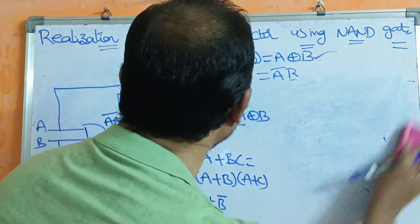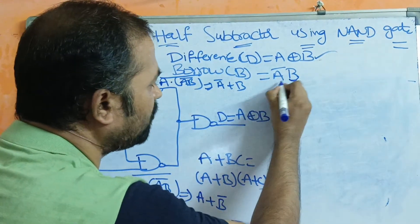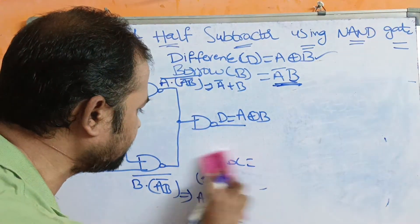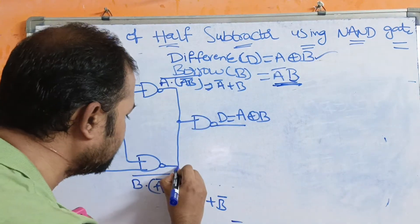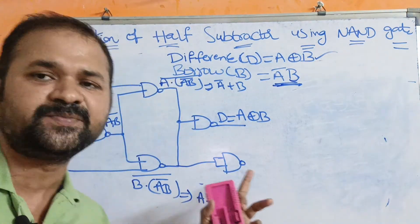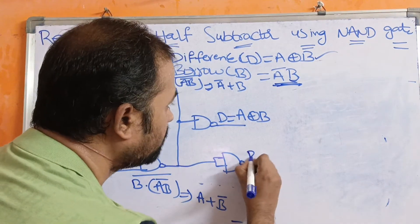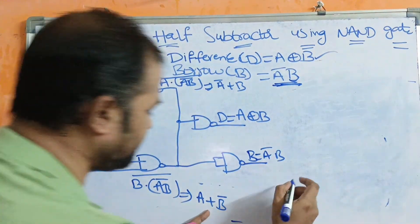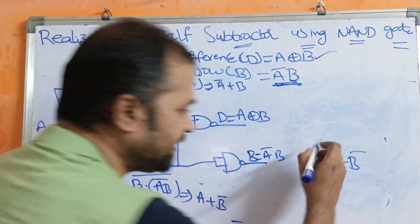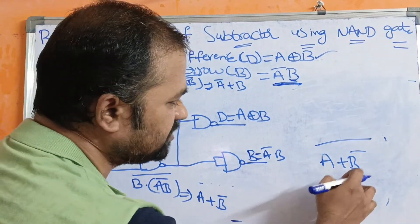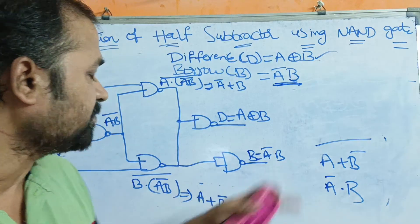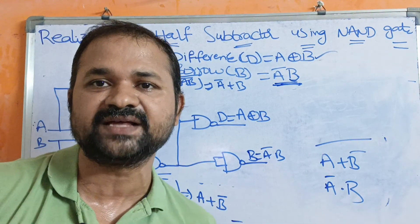Next, we have to design for the borrow output. The formula for borrow is Ā·B. Here, we already have A+B̄ from the third NAND gate. If we complement A+B̄ using a single-input NAND gate — which acts as a NOT gate — we get (A+B̄) bar. By De Morgan's law, this equals Ā·B̄ bar = Ā·B. So passing A+B̄ through a single-input NAND gate gives us the borrow output Ā·B. In this way, we can implement a half subtractor using only NAND gates.